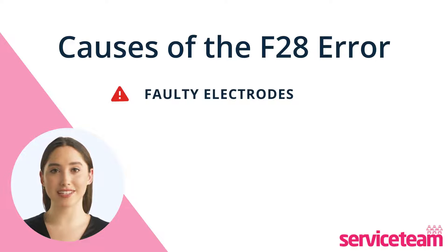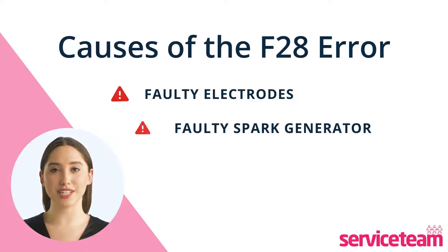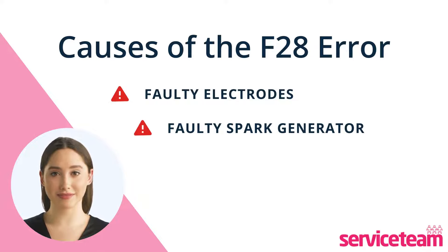If your boiler shows an F28 fault, it could be due to a faulty spark generator, which ignites the gas. Replacing the faulty part usually solves the issue.